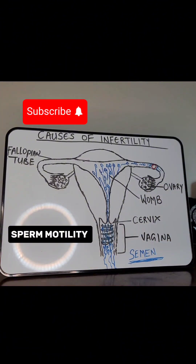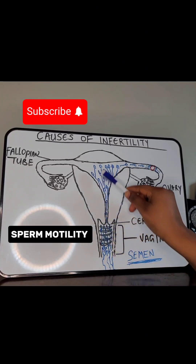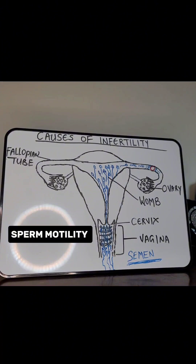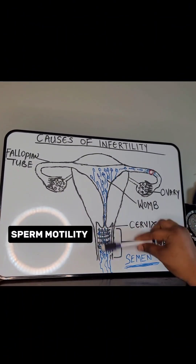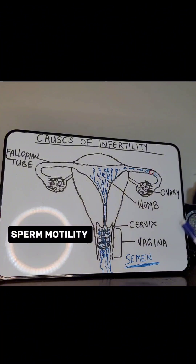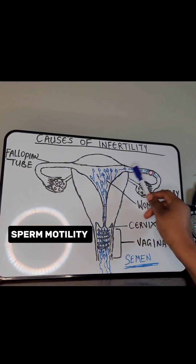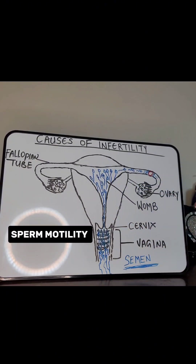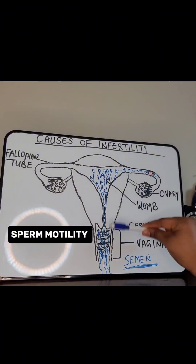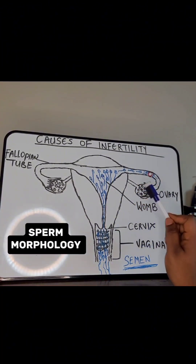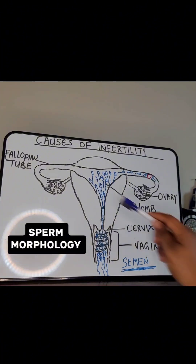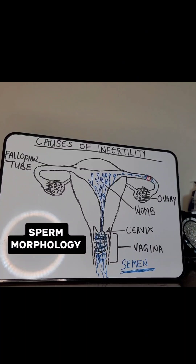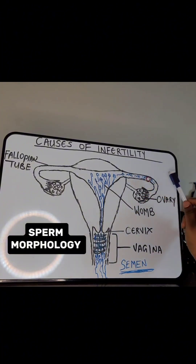Let's talk about motility — simply meaning movement. Your sperm count may be 100 million, but do they have the ability to move? The journey is long, all the way from the vagina through the womb and into the fallopian tubes. If they don't move, or their movement is not progressive — just staying in one spot or moving in small circles — there is no way they will reach the egg. Then there is morphology, which refers to the shape and structure of sperm cells. If the majority are abnormal in shape, they cannot penetrate or fertilize the egg.